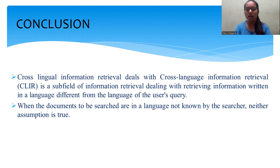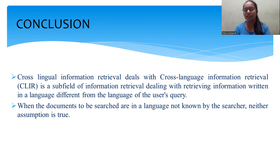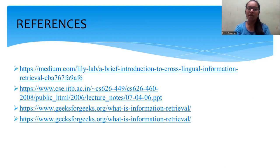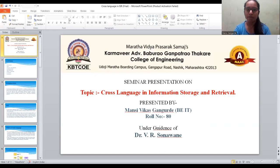In conclusion, cross language information retrieval is a subfield dealing with written language that is different from the query language. When a document is searched and the language history is not present, it will give some assumption — which may be true or false — or it gets corrected. This is very helpful for users, both technical and non-technical. Here are some of the references I took help from. Thank you.